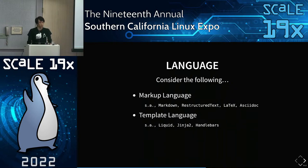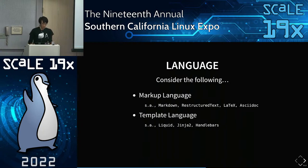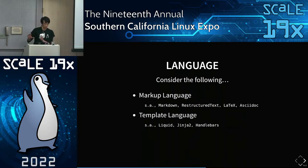Another language type that may not be as familiar is a templating language. These are languages that help you transpile one language into another. For example, you might have content in JSON and want to reproduce it as YAML or generate a diagram like PlantUML. You can write templates in languages such as Liquid, Jinja, or Handlebars that let you transpile one language into another.